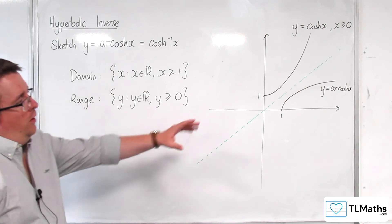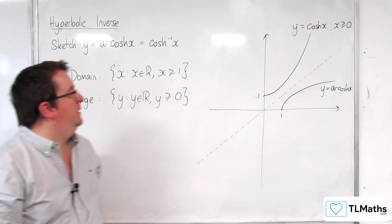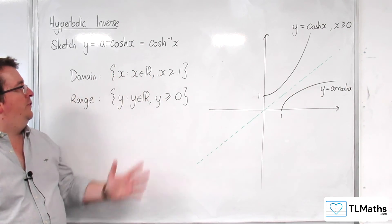So this is what arcosh x looks like, and this is its domain and range.